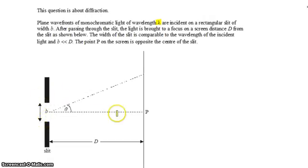After passing through the slit, the light is brought into focus on a screen at distance d from the slit. The width of the slit is comparable to the wavelength of the incident light. That's important because it tells us we're going to get diffraction.